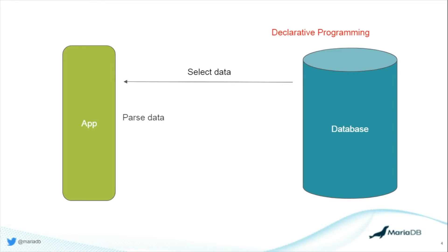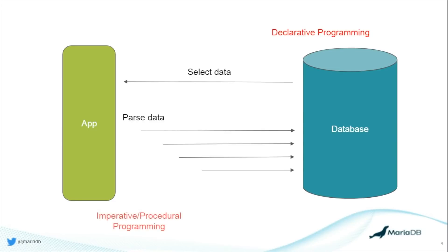Once data is returned to your application, it's traditionally on the application to parse through it — performing subsequent operations like conditionals with if/else statements or looping through data sets. This is done on the application side and is known as imperative programming, the antonym to declarative programming. Imperative programming focuses on step-by-step control flow, and underneath that is procedural programming — grouping units of code into reusable procedures.